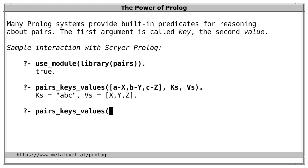Since this predicate is a true relation, we can also use it in other directions. For example, to answer questions like, what are the pairs P's whose keys are A, B, and C, and whose values are the variables X, Y, and Z?